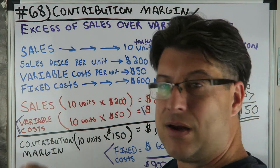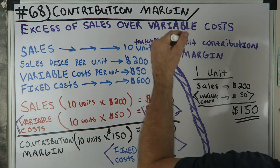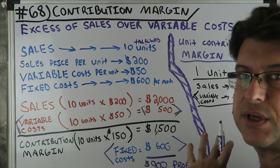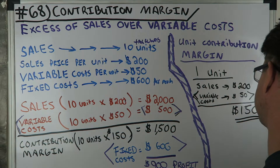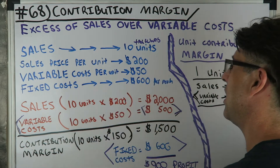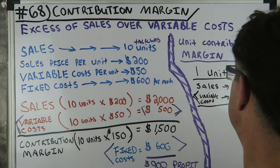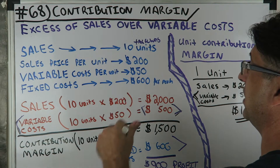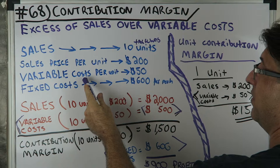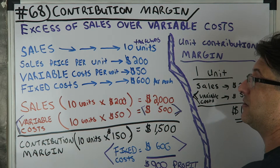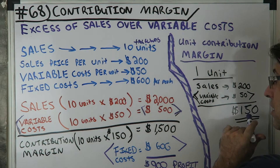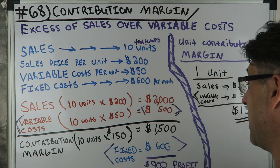Now let's go over to the unit contribution margin. It just intuitively makes more sense to me. I'd like to just see that I'm making $150 a pop. Sales price per unit $200, minus variable cost per unit $50, equals $150 per unit. Then times 10 units sold equals $1,500. From that $150 per unit number, I can get my breakeven point and other key figures.